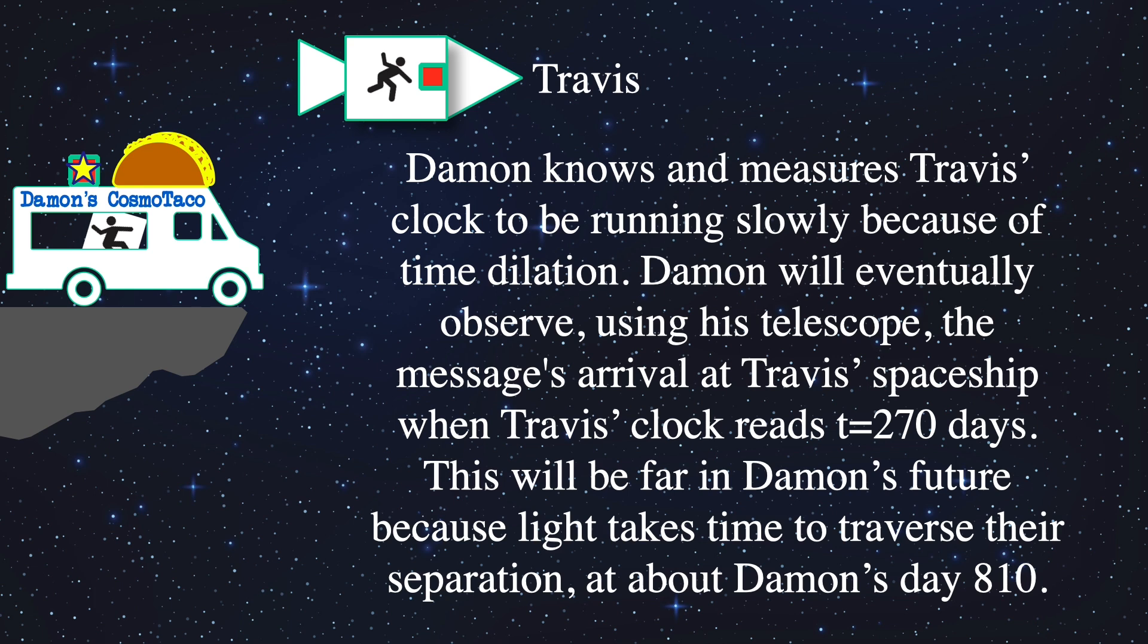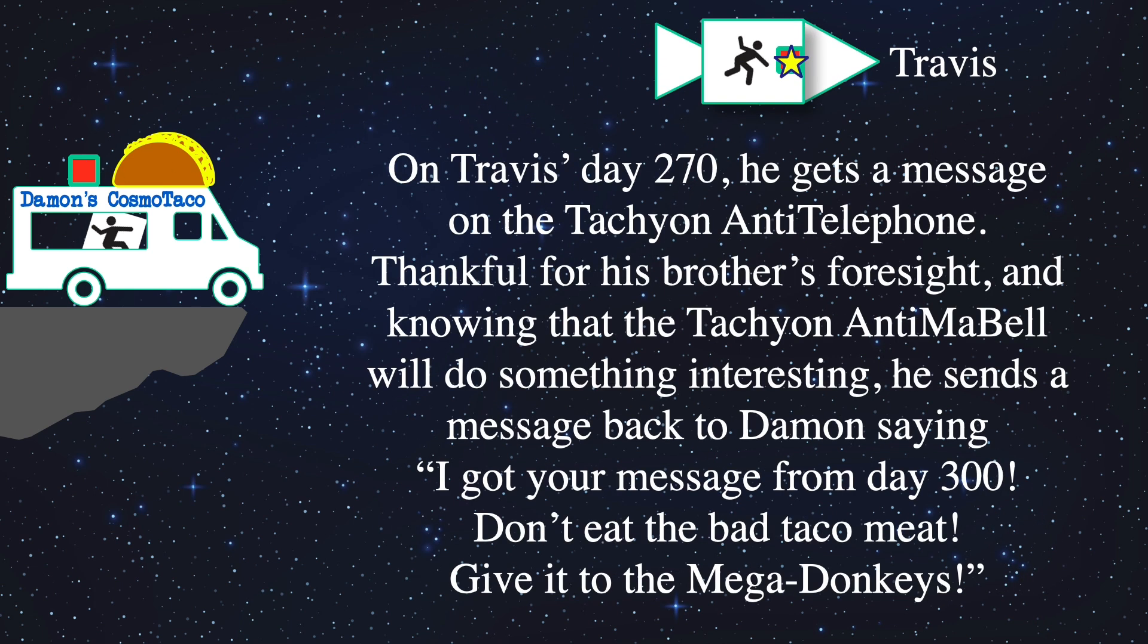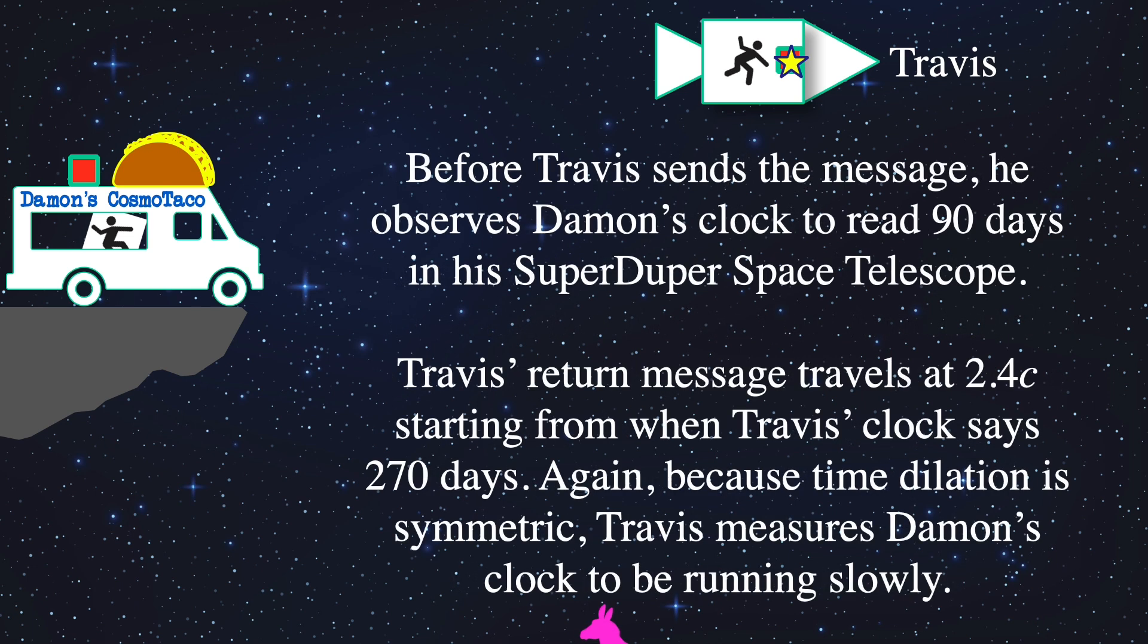Now let's see what Travis measures. On Travis's day 270, he will get a message on the tachyon antitelephone: Don't eat the meat. Travis looks quickly in his telescope back to Damon and sees that Damon's clock reads in his telescope only 90 days, and he gets a really bright idea. Travis calculates that if he sends a message now, it'll get there before Damon sends it, so he won't ever eat the meat. Travis then sends Damon the tachyon antitelephone and says, I got your message from day 300. Don't eat the bad taco meat. Just give it to the trans-dimensional mega donkeys that are always around the truck.